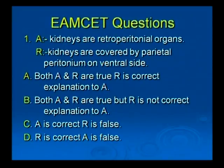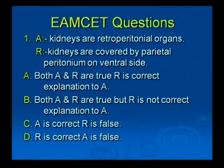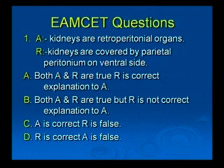I have prepared some important questions for M-set examinations, statement-type questions. Assertion: kidneys are retroperitoneal organs. Reason: kidneys are covered by parietal peritoneum on the ventral side. The options are: option A, both assertion and reason are true and reason is the correct explanation to the assertion; option B, both are true but reason is not the correct explanation; option C, assertion is true and reason is false; option D, reason is correct and assertion is false.